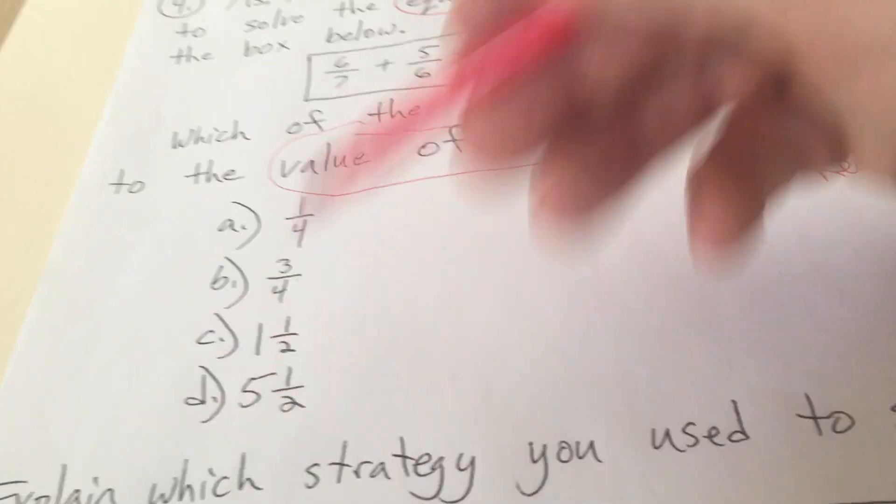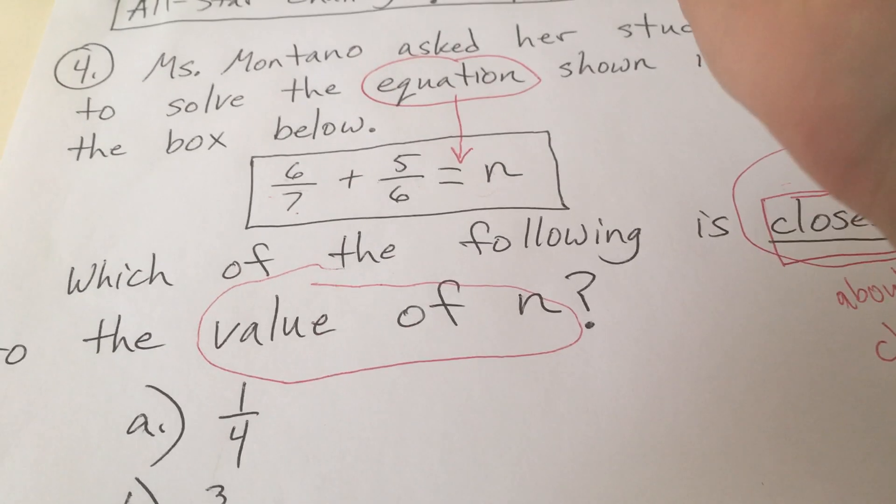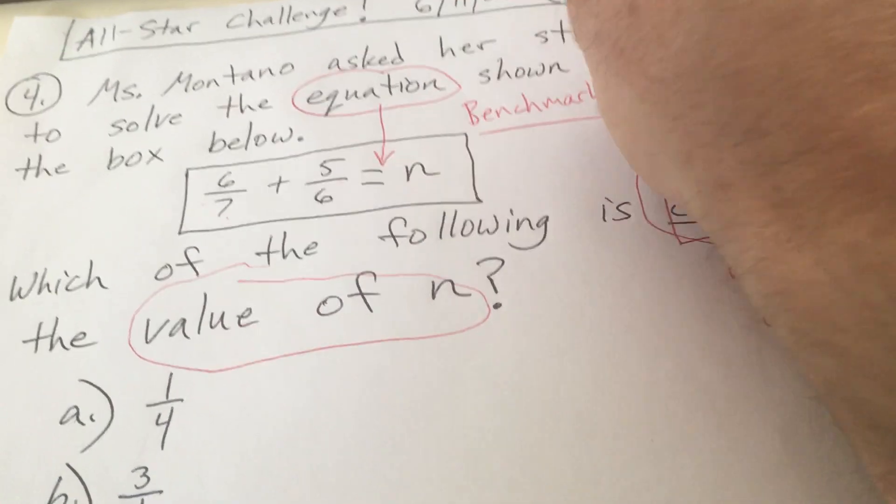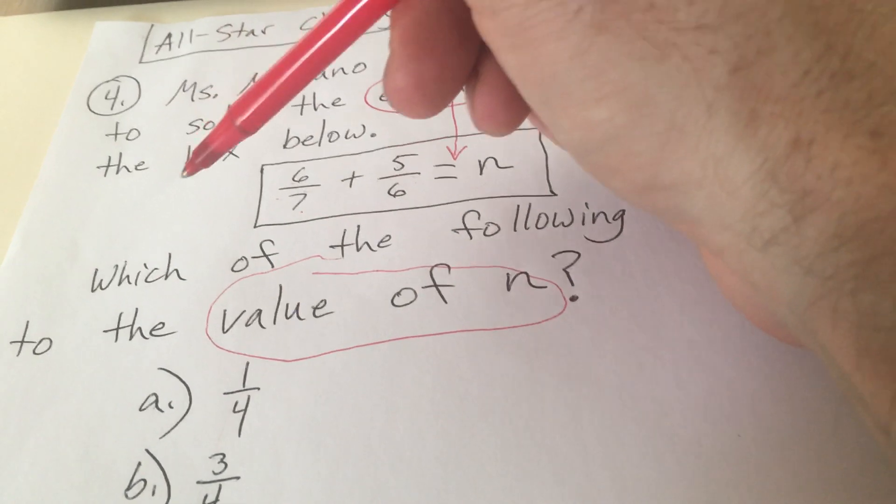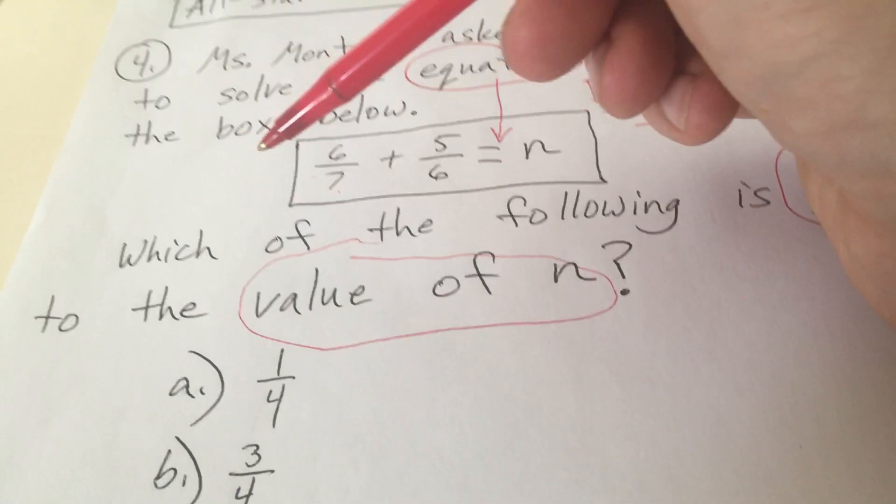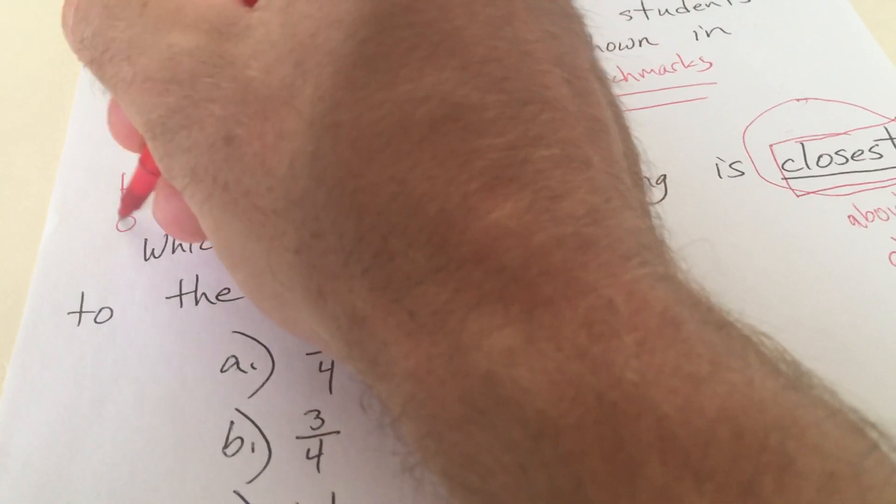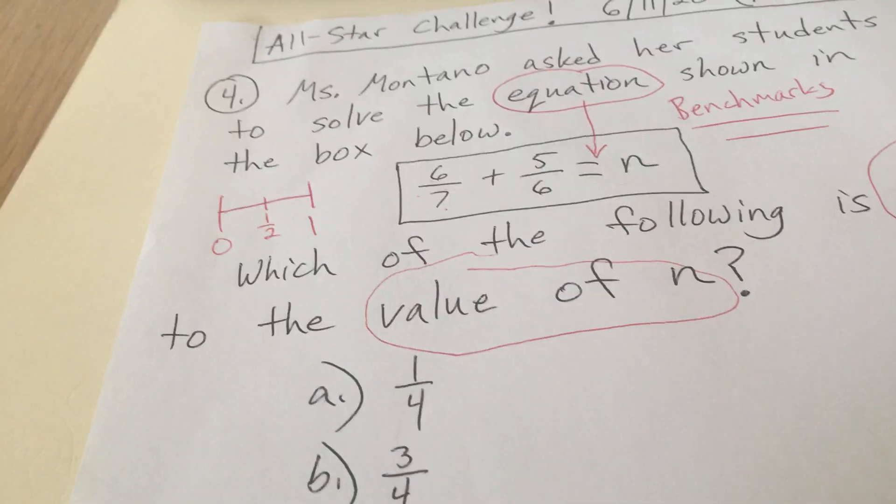So which one of these is closest to n? Using this strategy, this is called benchmarks, finding and thinking about fractions as benchmarks. So six-sevenths, you're basically thinking in your head, is that closer to zero, is it closer to one-half, or is it closer to one? Whereabouts is six-sevenths? If this was zero to one and in the middle is one-half, where would six-sevenths be?